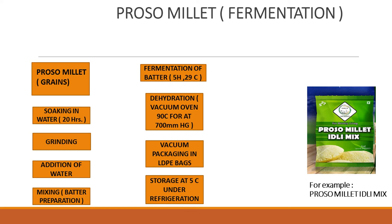Let's move further to ProSomulet fermentation. The fermentation step follows these particular steps: first we have the grains, then soaking in water for 20 hours — its main function is to remove anti-nutritional factors like polyphenols and phytates, and it makes the grinding easy. After that we have grinding using several grinders, then we add water and make a batter by mixing. Then fermentation is done for 5 hours at 29 degrees Celsius. Fermentation improves nutritional value, digestibility, and reduces cooking time.